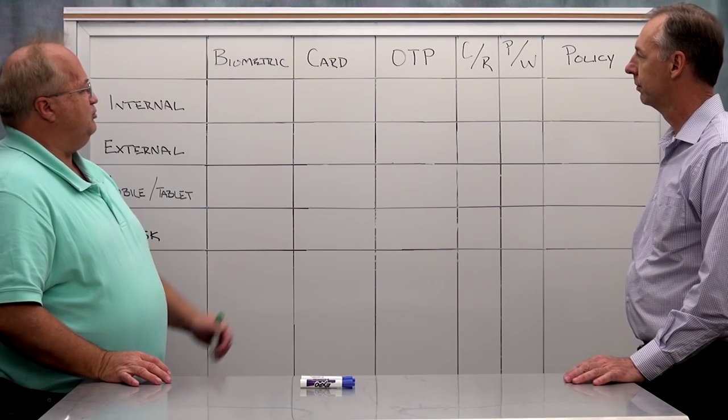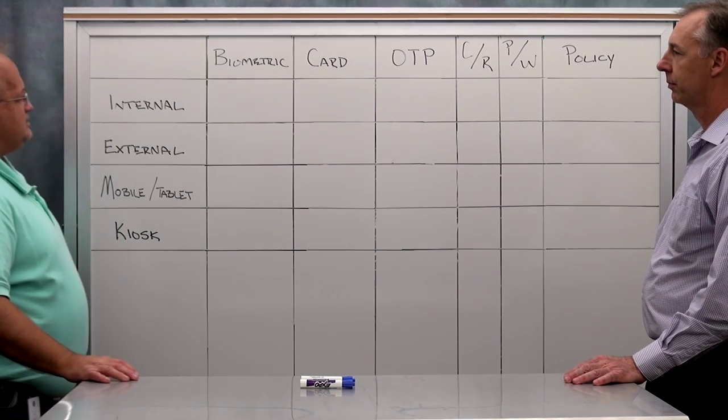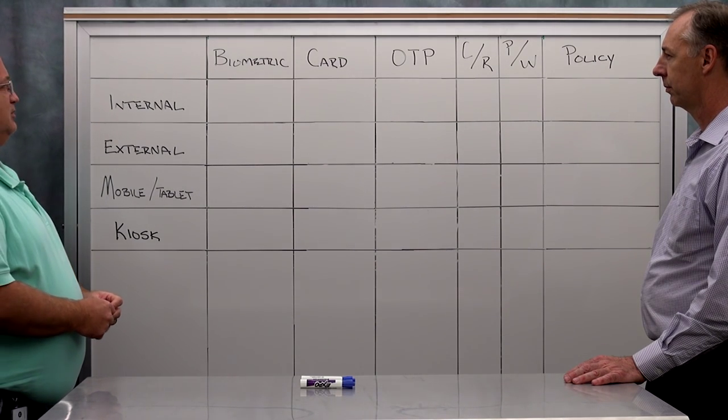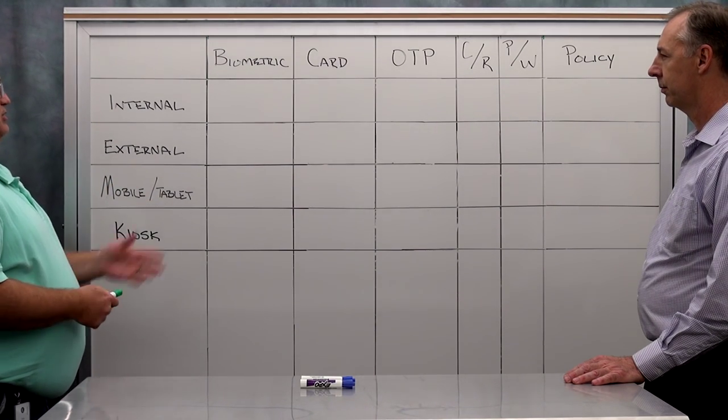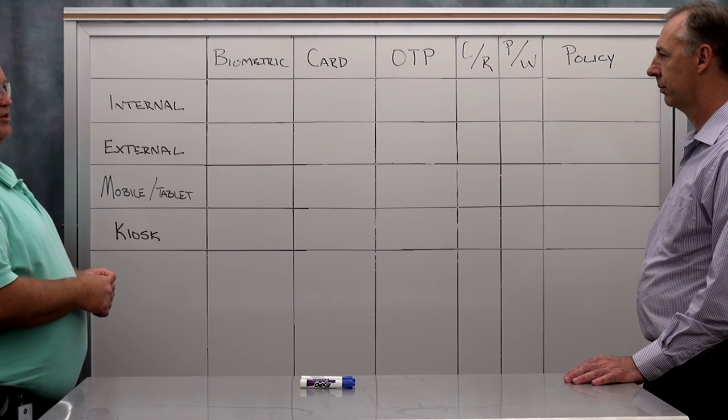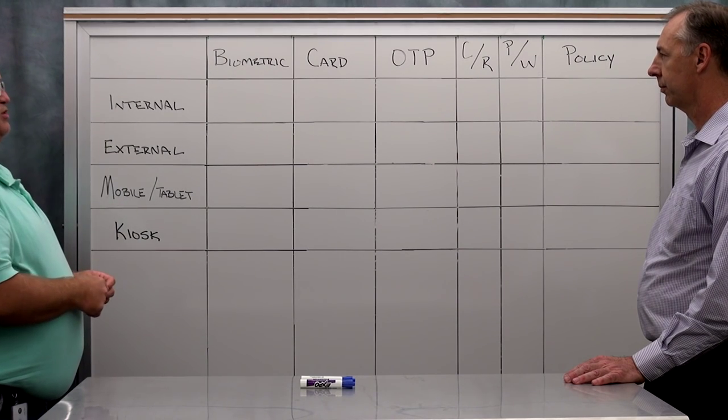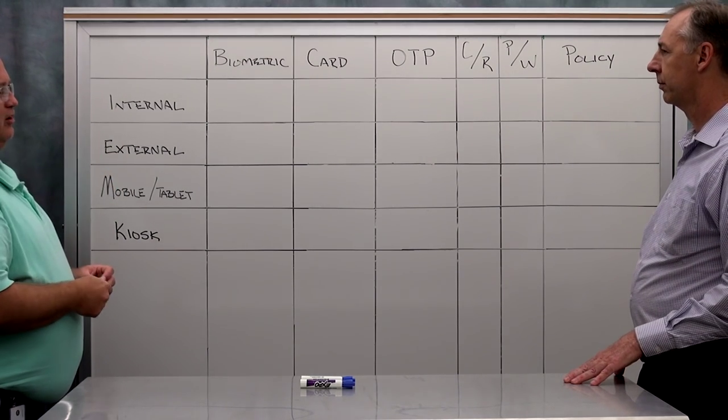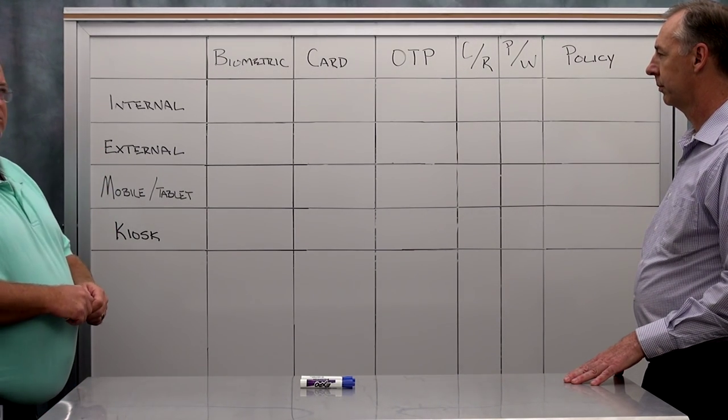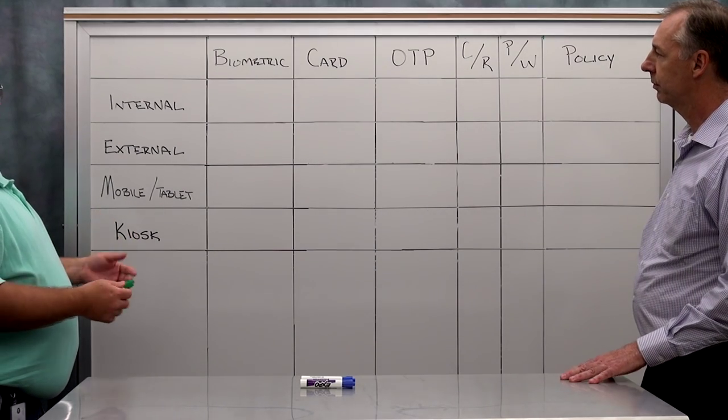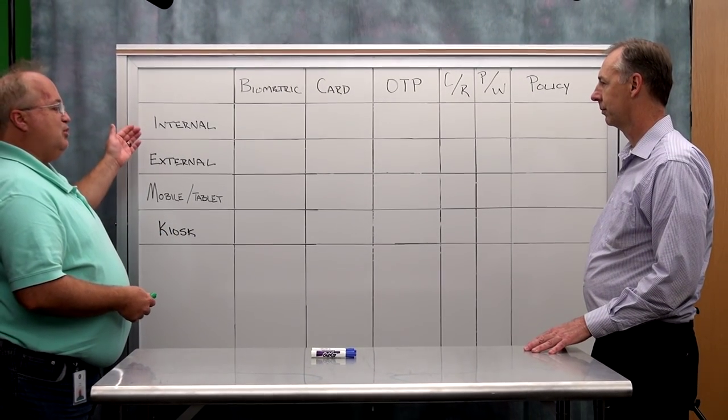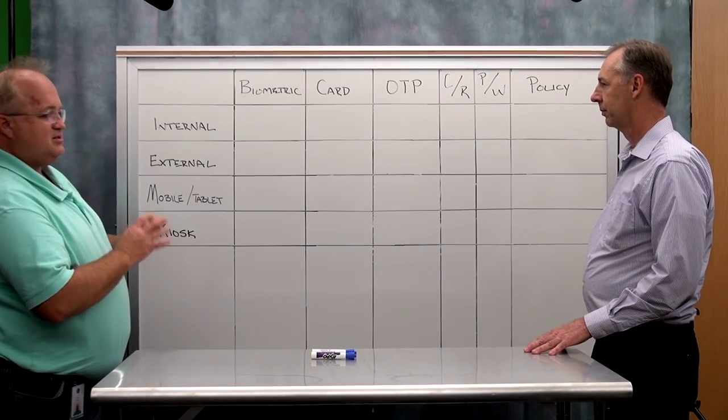So what I've drawn out here on the board before we start is some of our advanced authentication types or methods, if you will. Biometrics cards, one-time passwords, whether it's a hard token or whether it's a TOTP, a soft token, challenge response, and password. We'll talk about the last column policy in a minute. These are typical types of users that a business might have. A business could easily have more than this. Most businesses might even have less than this.